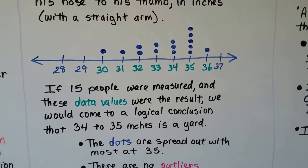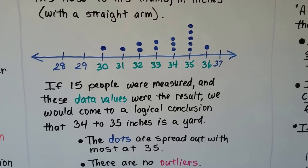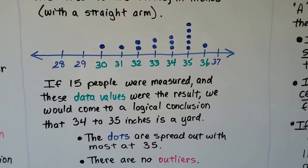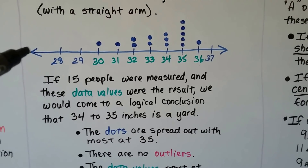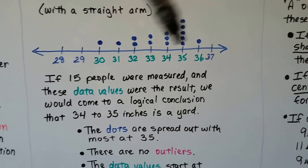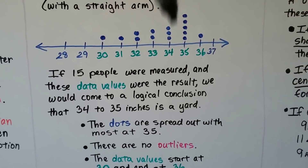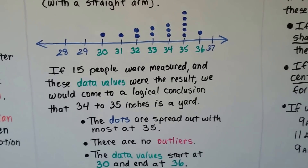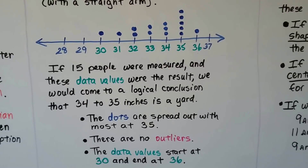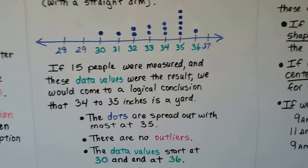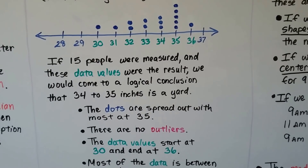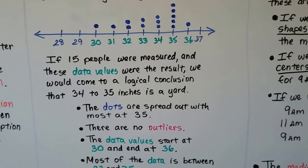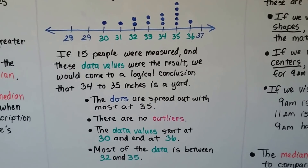Because that's where most of the measures ended up. The dots are spread out with most at 35. There are no outliers — it's not like someone's got a 24-inch arm. They're all basically right in this area. The data values start at 30 and end at 36, and most of the data is between 32 and 35.